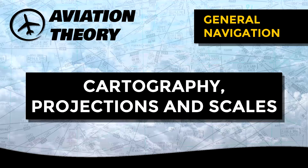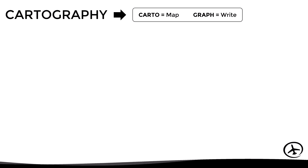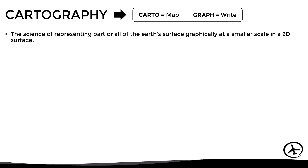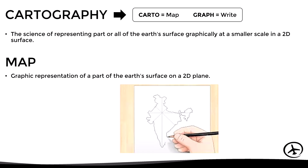Today we will talk about cartography, projections, and scales, which are essential concepts for the proper interpretation of navigation charts. Cartography comes from 'cardo,' meaning map, and 'graph,' meaning write. It is the science of representing a part or all of the earth's surface graphically at a smaller scale on a 2D surface, such as a piece of paper. This graphic representation is called a map.